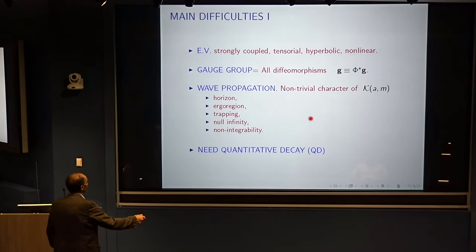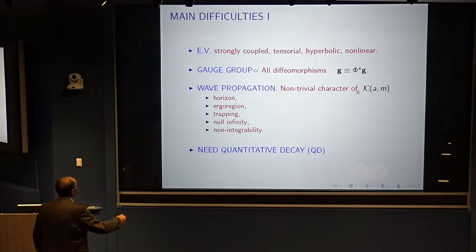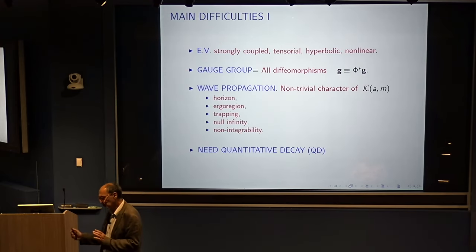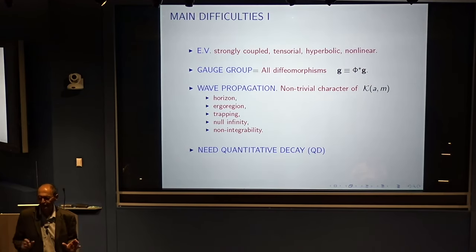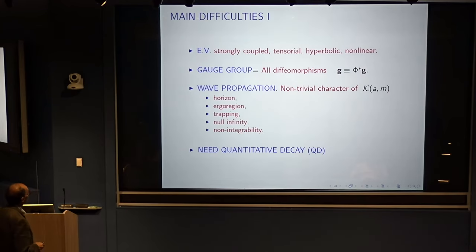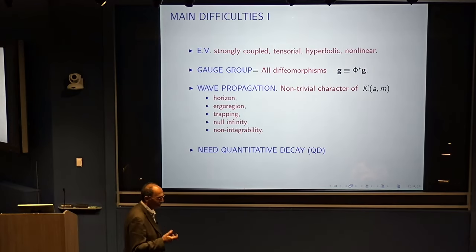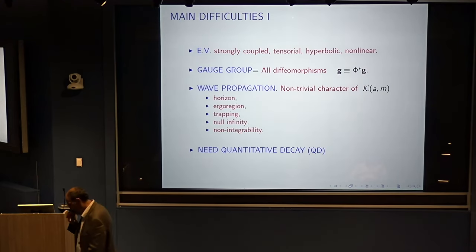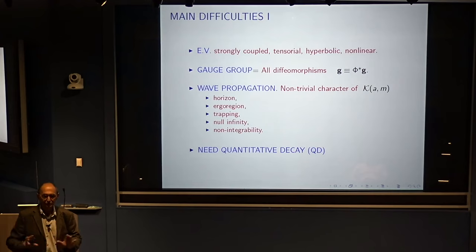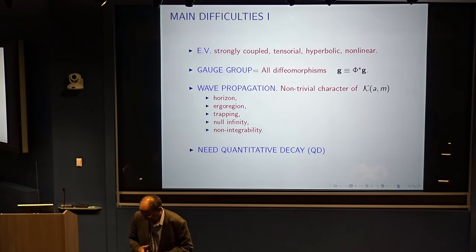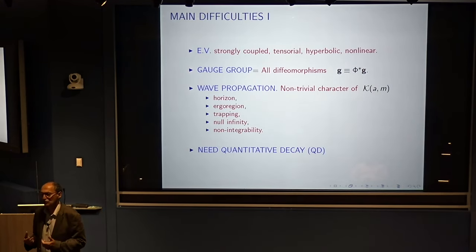Another major difficulty that plays a fundamental role — going both ways as a difficulty and as something that can work in your favor — is the gauge group. The Einstein equations are invariant under a huge diffeomorphism group. If you want to describe the character of wave propagation on solutions of the Einstein equation, the difficulty is that decay is a gauge-dependent notion. For example, we know the wave equation in 3+1 Minkowski space decays like t^{-1}, but that is relative to inertial coordinates — changing coordinates gives something entirely different.